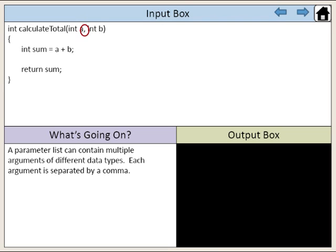A parameter list can contain multiple arguments of different data types. Each argument is separated by a comma.